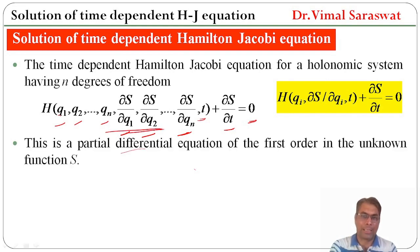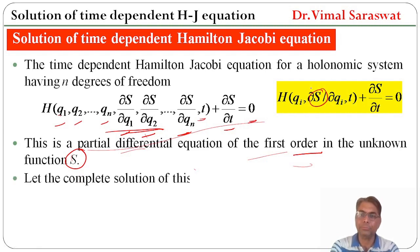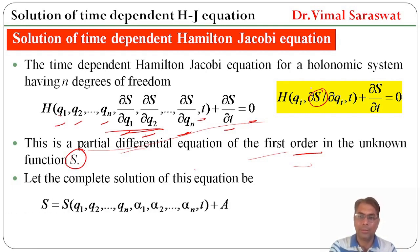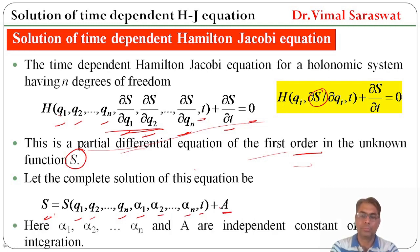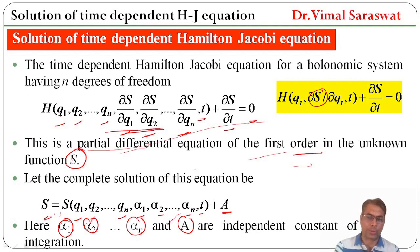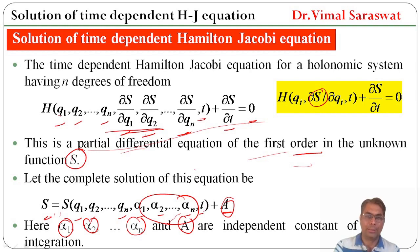This is a partial differential equation of first order in the unknown function S. So this S is our unknown function. Let the complete solution of this equation be S, where S is a function of q1, q2, ..., qn, alpha1, alpha2, ..., alpha_n, t plus a constant. Here alpha1, alpha2, ..., alpha_n and a are independent constants of integration, which we get by integrating this equation.